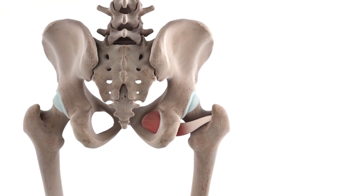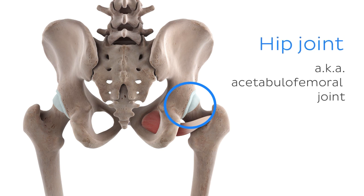By looking at these attachment points, we can clearly see that the obturator externus muscle crosses just one joint, which is of course the hip joint, also known as the acetabulo-femoral joint.